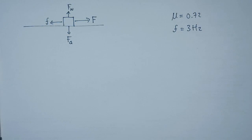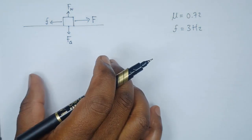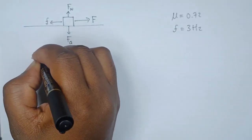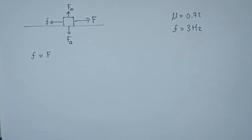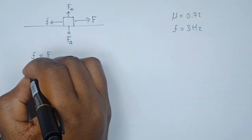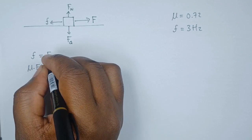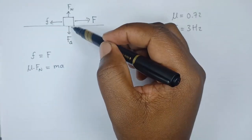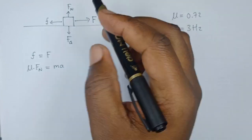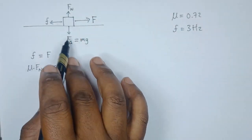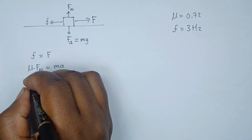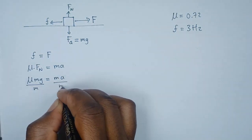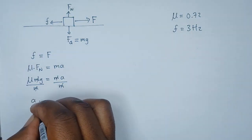Since the block is at the point where it's about to slip, we apply Newton's law. The friction force equals the applied force F. Friction force is given by μ times the normal force, and the applied force F equals mass times acceleration. Since the normal force and weight are equal and opposite, the normal force equals mg. So we have μmg = ma. Dividing both sides by mass, we get a = μg.